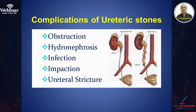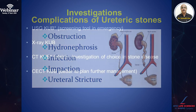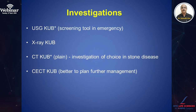What are the complications? A chronically impacted stone can give rise to obstruction and proximal hydroureteronephrosis. The stagnant urine is exposed to infection, and a long-standing impacted ureteric stone can cause stricture of the ureter.